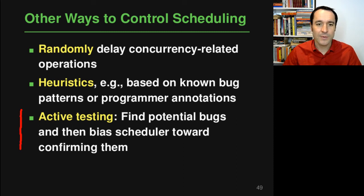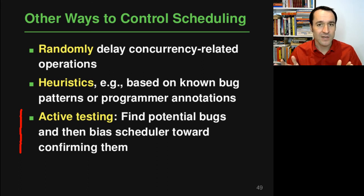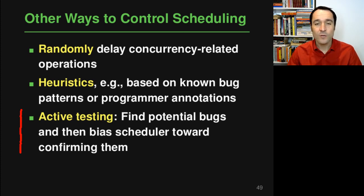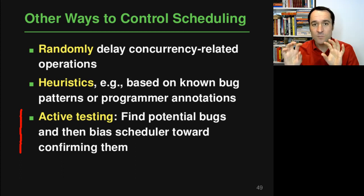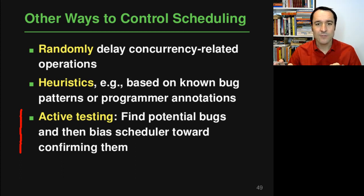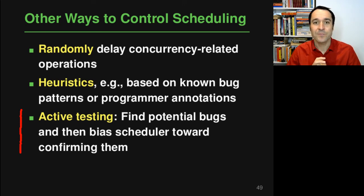Finally, there's a technique called active testing, which works in two phases. Phase one uses some analysis — for example, a static analysis — to find potential bugs. Phase two then biases the scheduler, knowing about these potential bugs, to confirm them in actual execution. For example, if two memory accesses may be in a data race, the scheduler waits before one access until the other is ready, then checks if this triggers interesting behavior that exposes the bug.